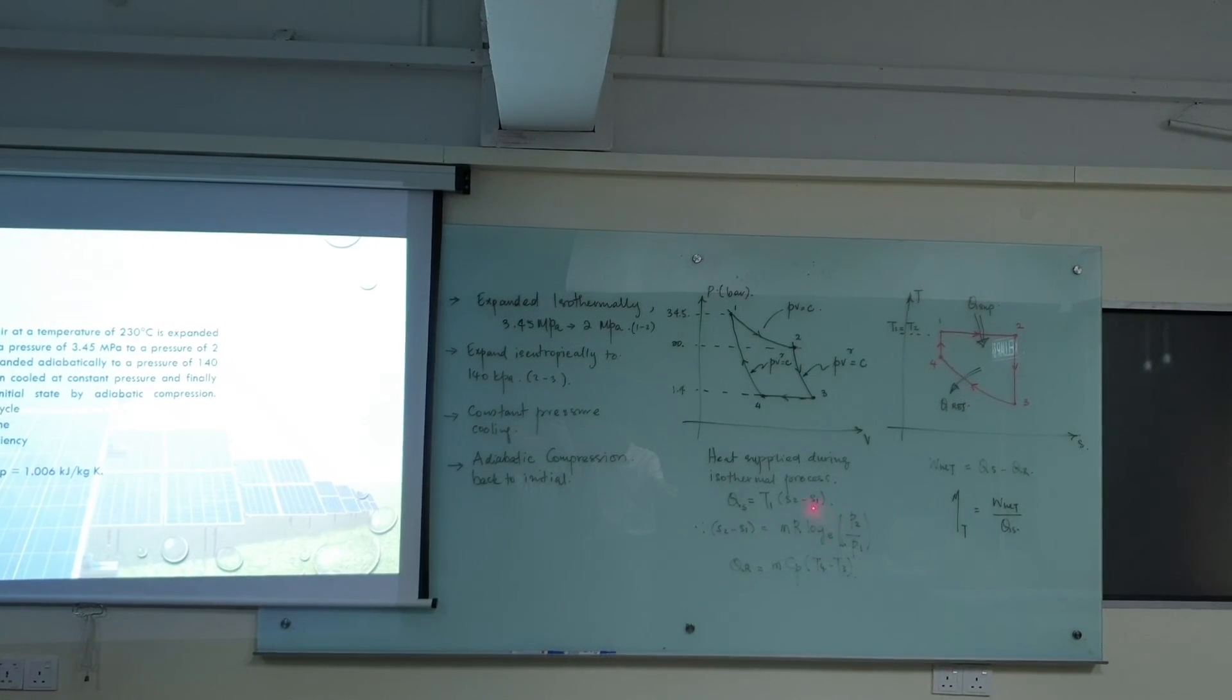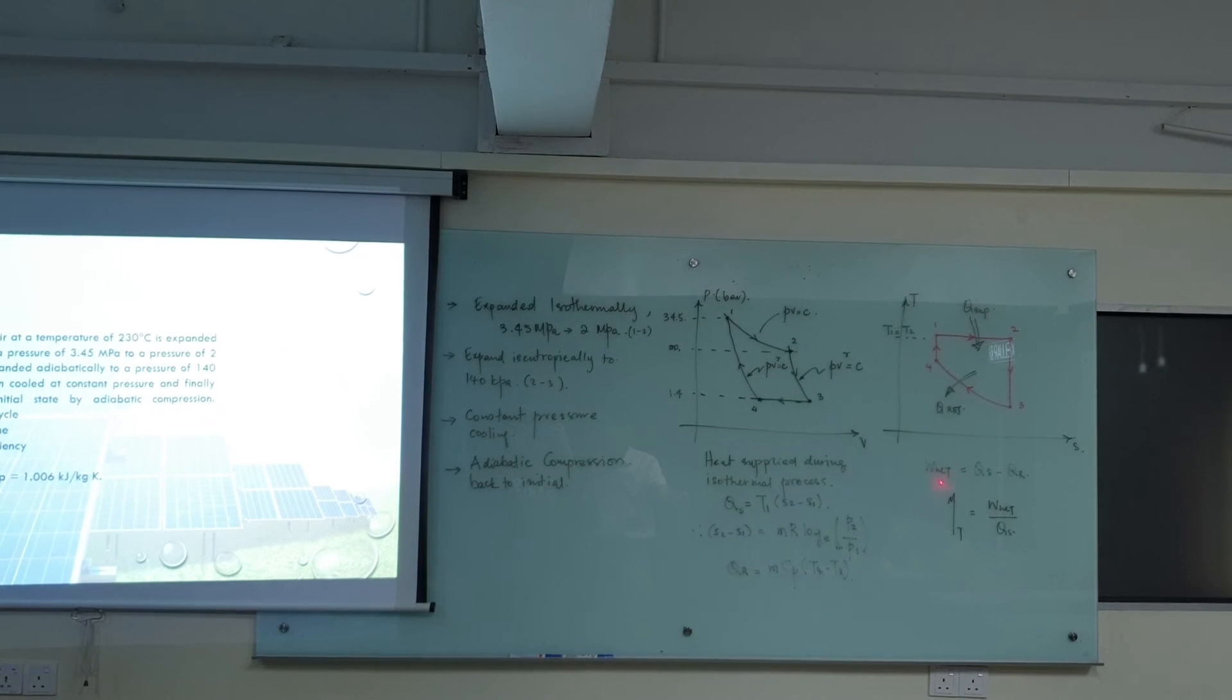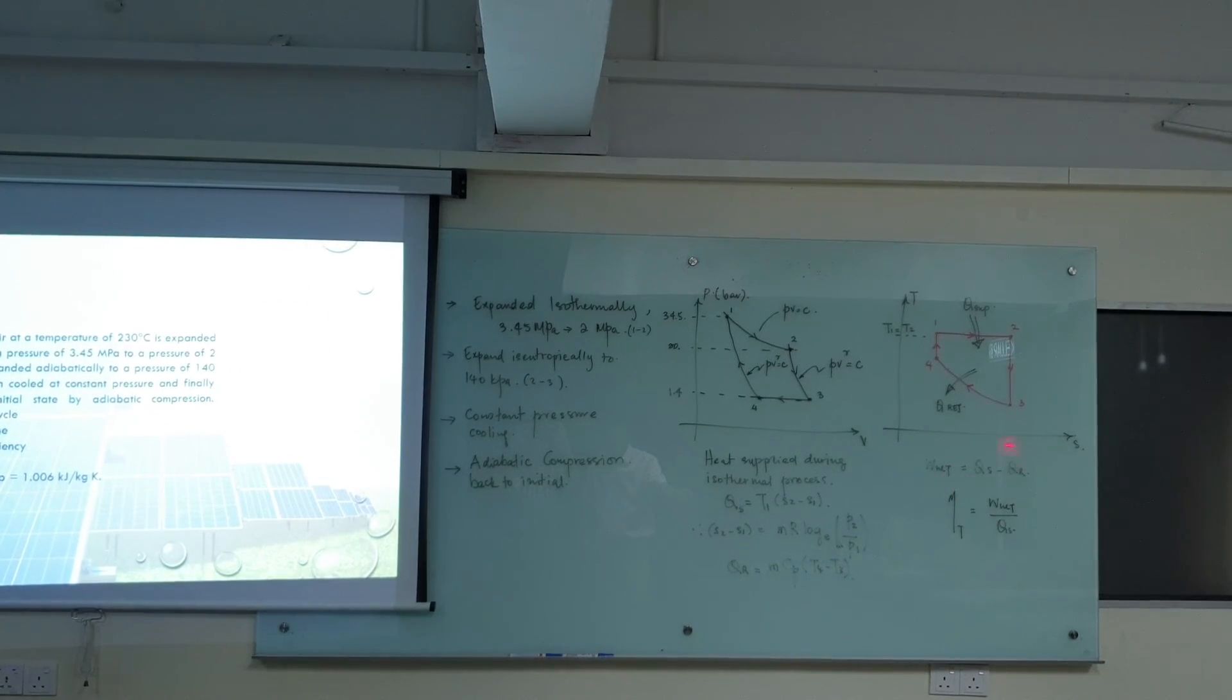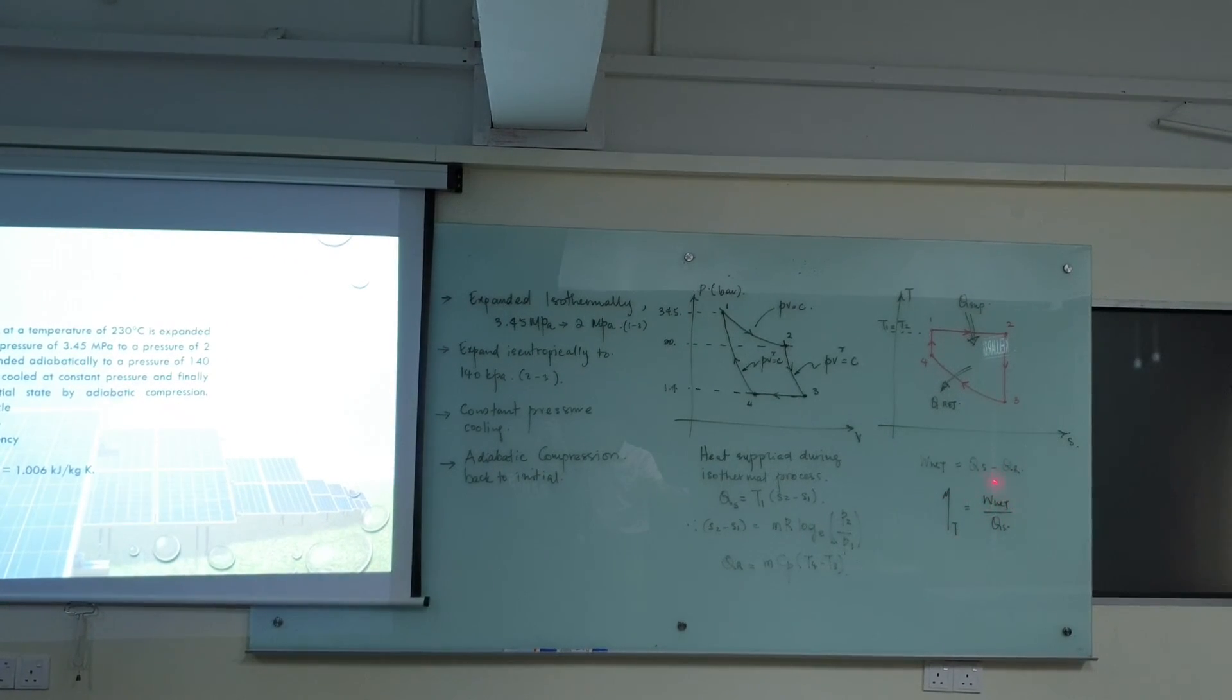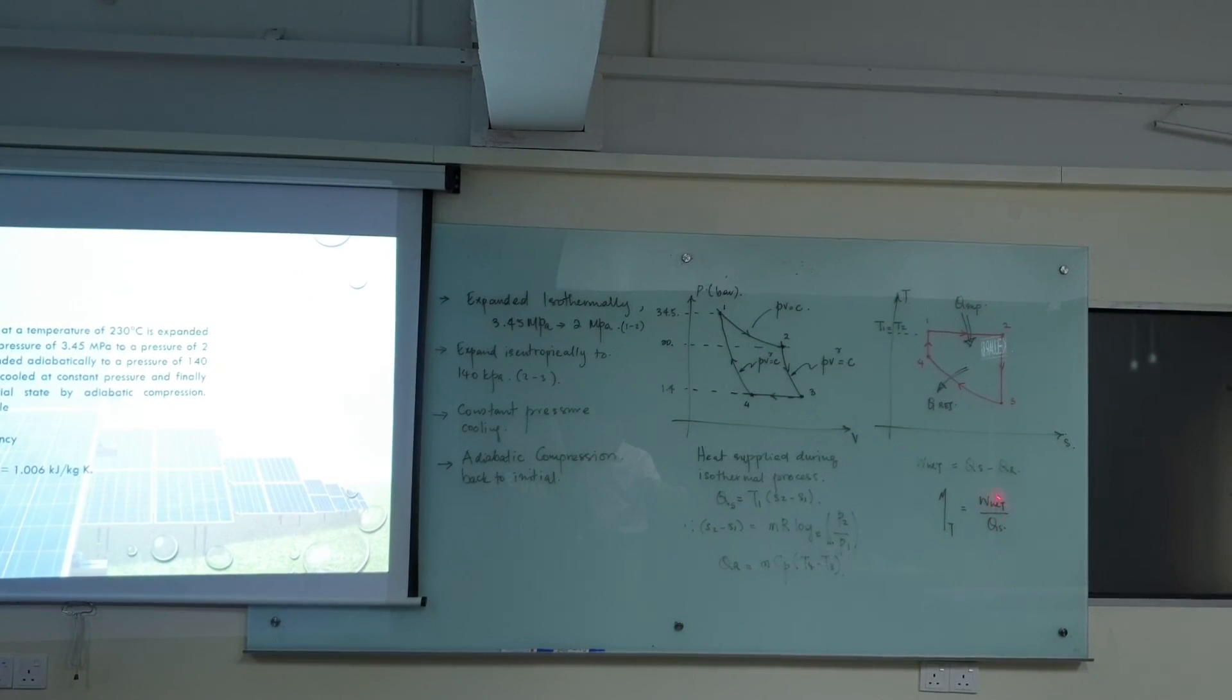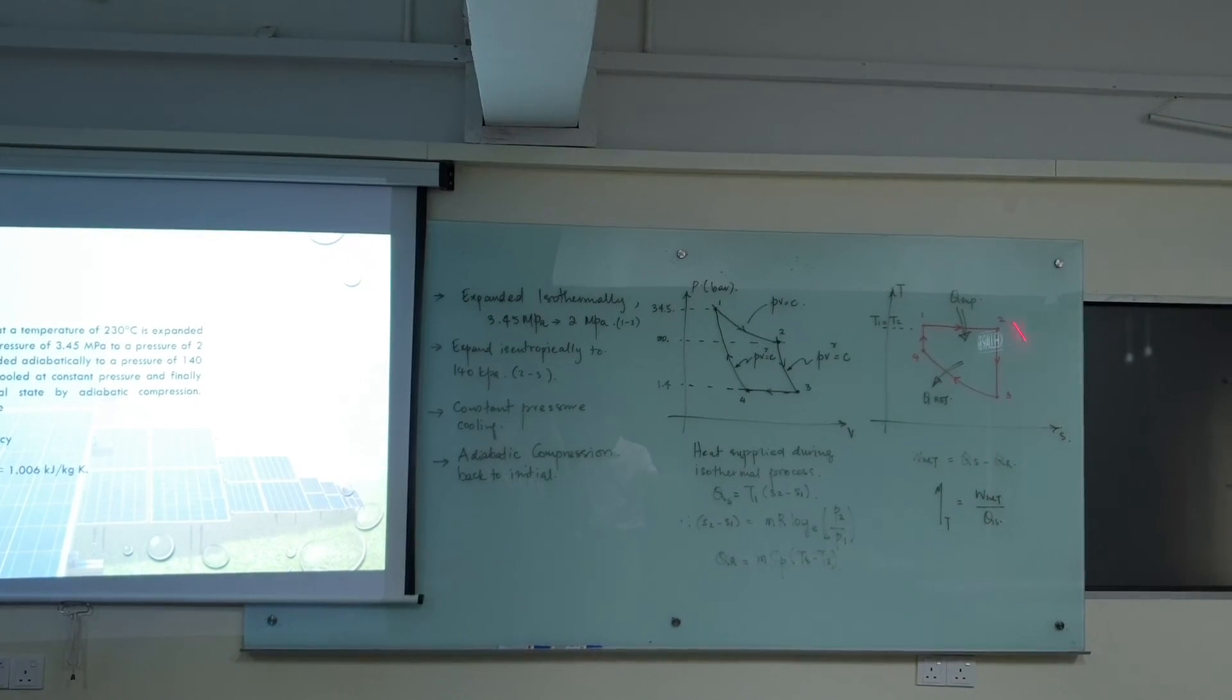So from here you will be able to calculate your heat supply and your heat rejected. Then after that the question asks for network done. So that is heat supply minus heat rejected, and the thermal efficiency can be defined as network out over heat supply. That's all for this question.